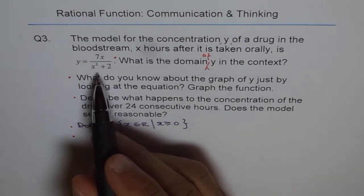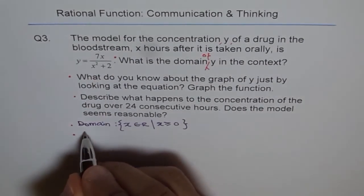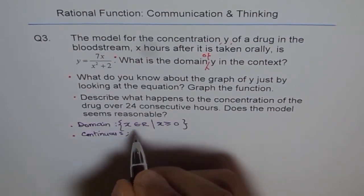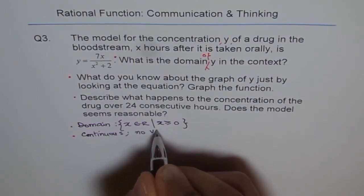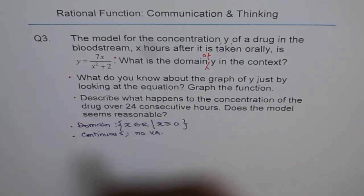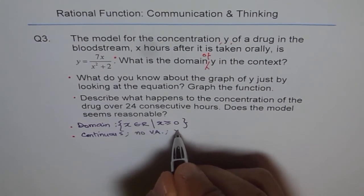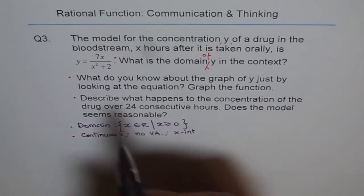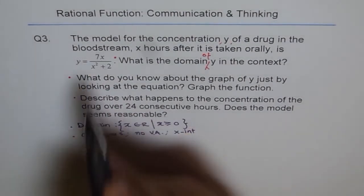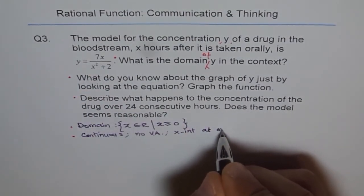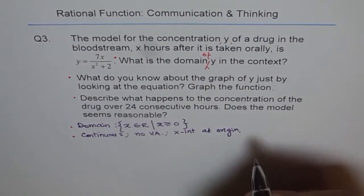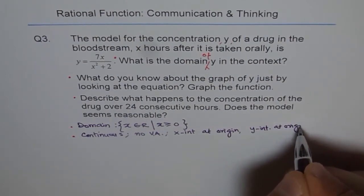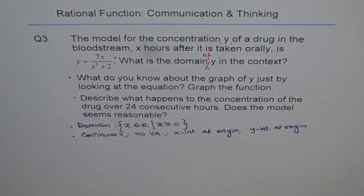So a couple of things which we can see. First, it is a continuous graph. We are seeing no vertical asymptote because denominator is never zero. And we can see x at intercept. So if I put y equals to zero, it is zero at zero, at origin. And even y-intercept is at origin. So origin is a part of this graph.